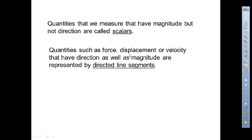Quantities such as force, displacement, and velocity that have direction as well as magnitude are represented by directed line segments. That is a vector. So here we have a directed line segment — it starts here and moves in this direction at this magnitude. We know specifically what direction the magnitude of whatever it is is going to be exerted in.